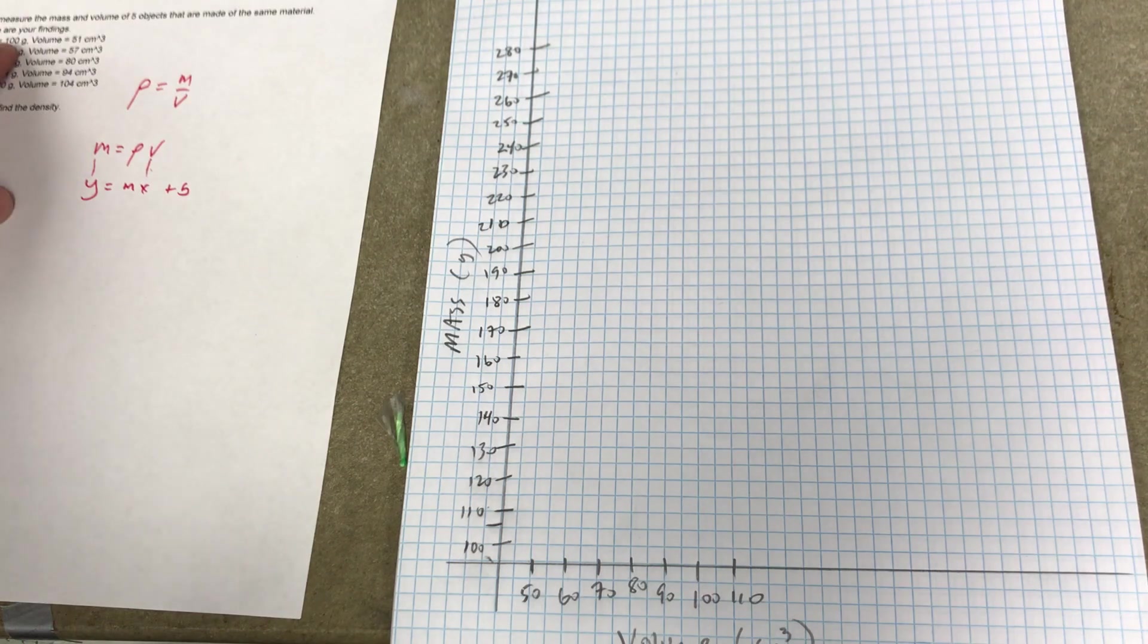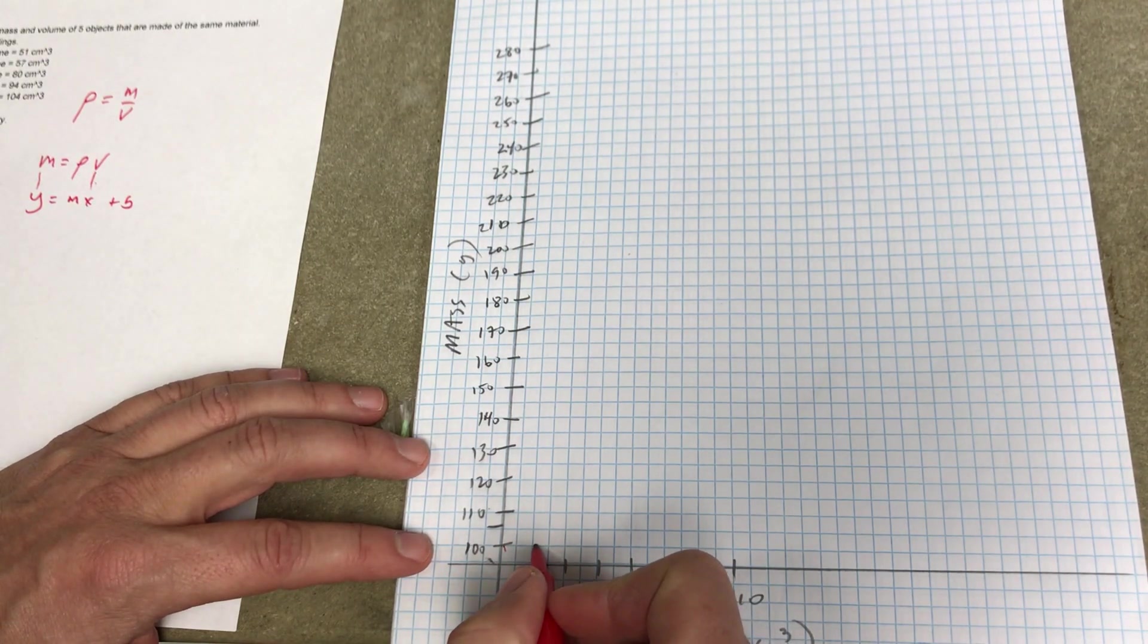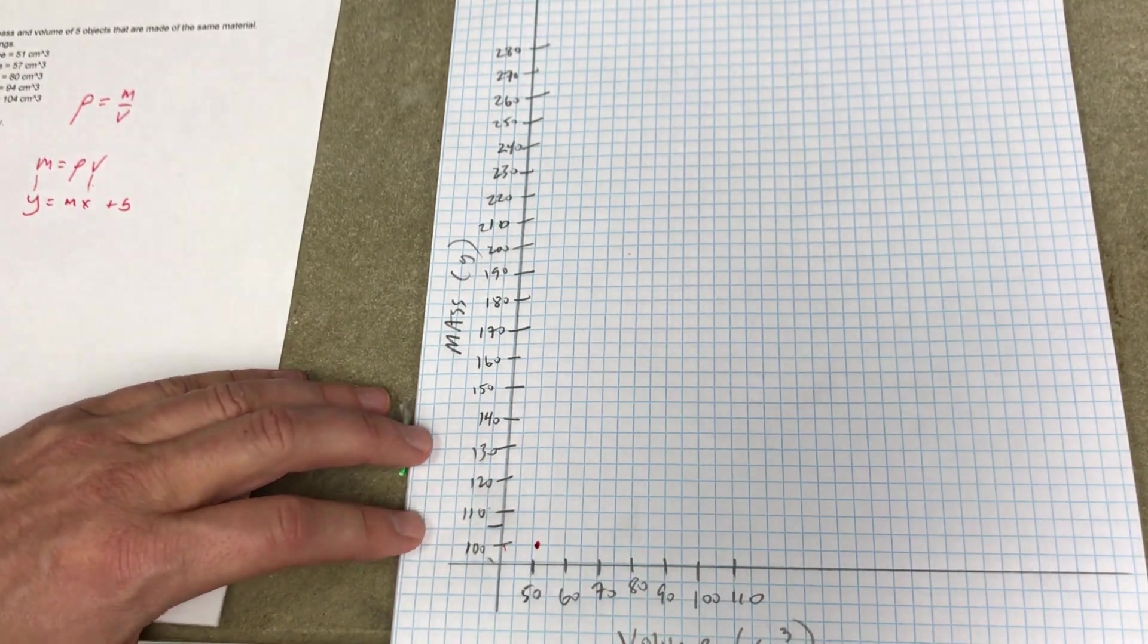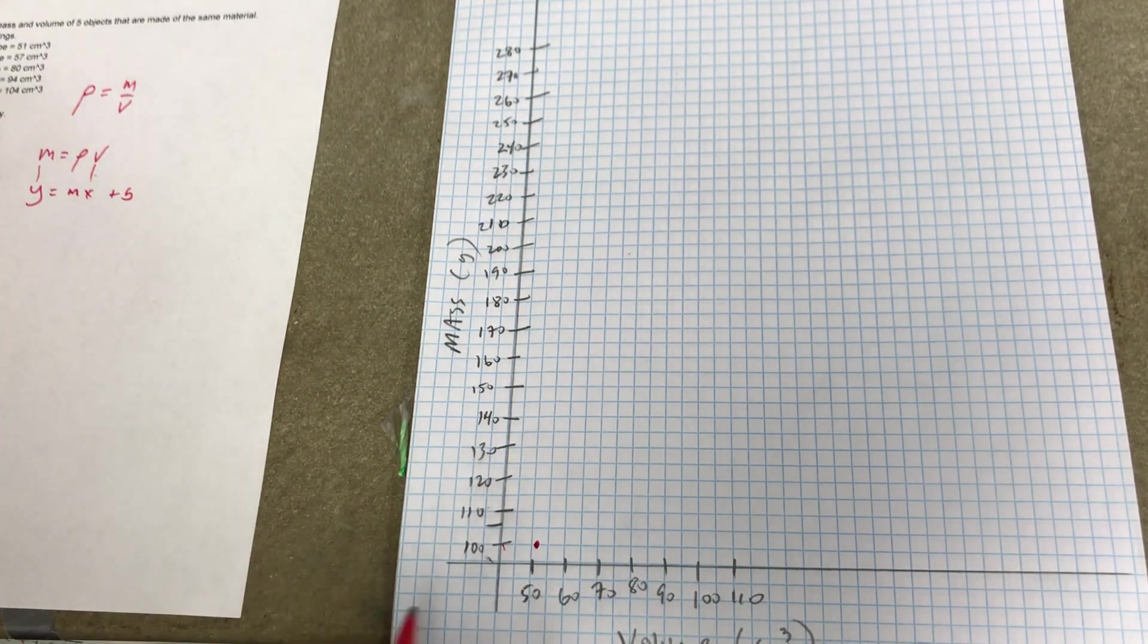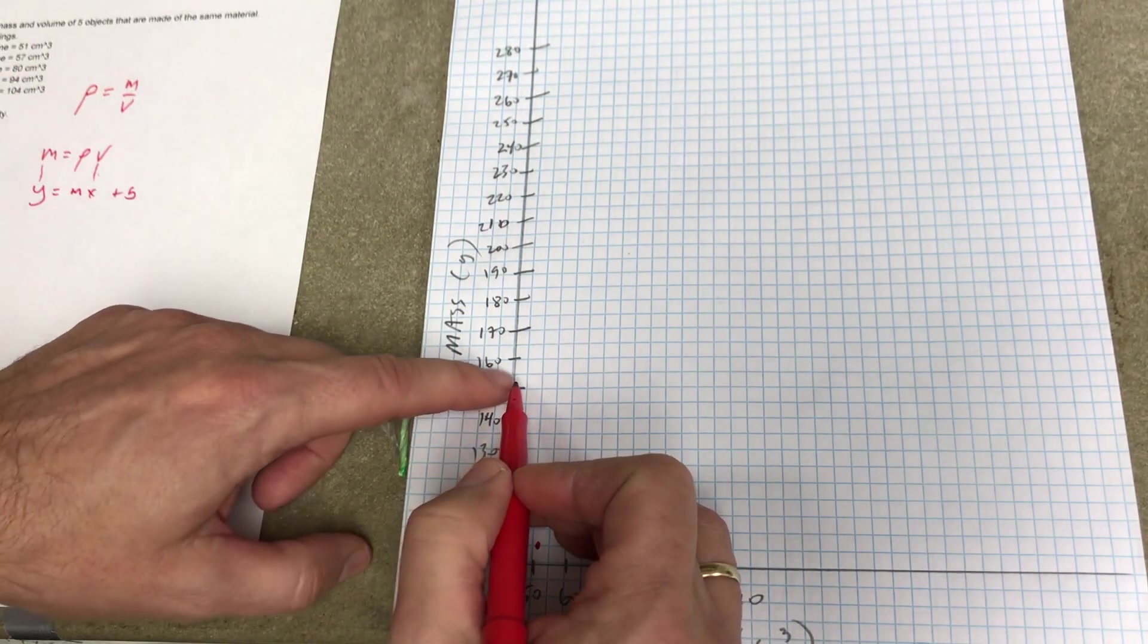Okay, so now I'm going to take this first data point. The first data point is 151. So I'm going to say 100 right here, and 51 is right there. So there's my data point. Next one, 152, somewhere right there, and 57.